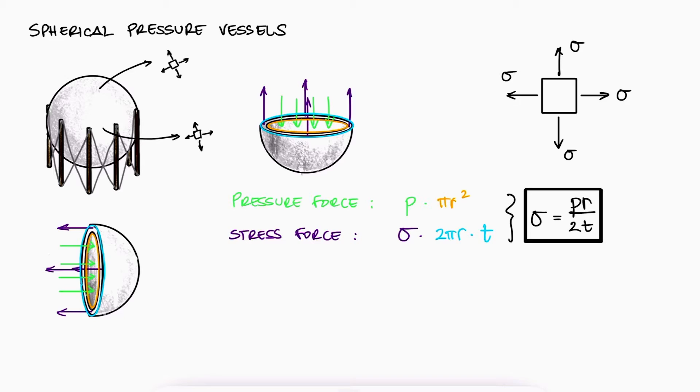Therefore, the spherical pressure vessel is subjected to two identical stresses, pr over 2t.